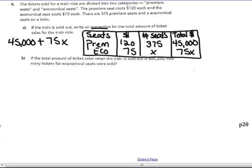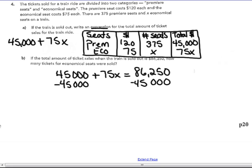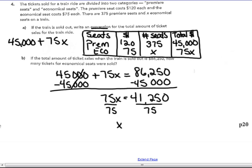The next part, part B, says write the equation basically. So the premier seats money plus the economical seats gives me the total money when the train sold out of $86,250. So I subtract $45,000 from both sides. And I get 75X equals 41,250. Dividing by 75 on both sides, I get X is equal to 550. So there were 550 times 75 does equal 41,250. And when you add it with the 45,000, you do get 86,250. So checking to make sure that it works.